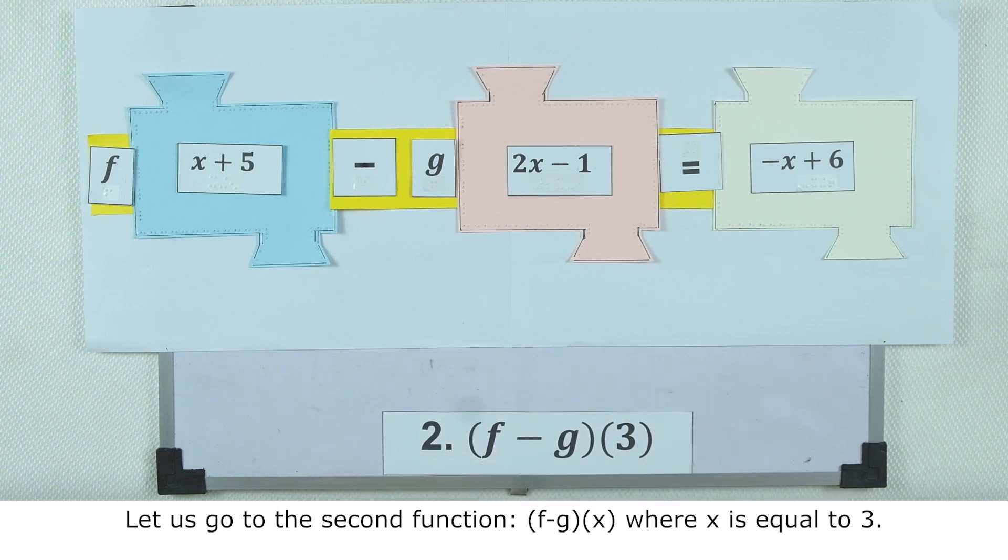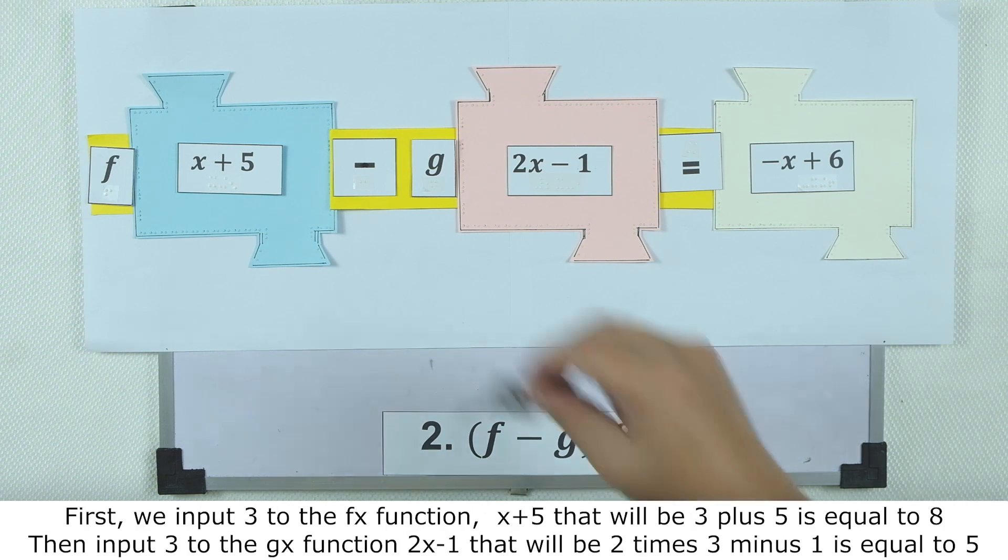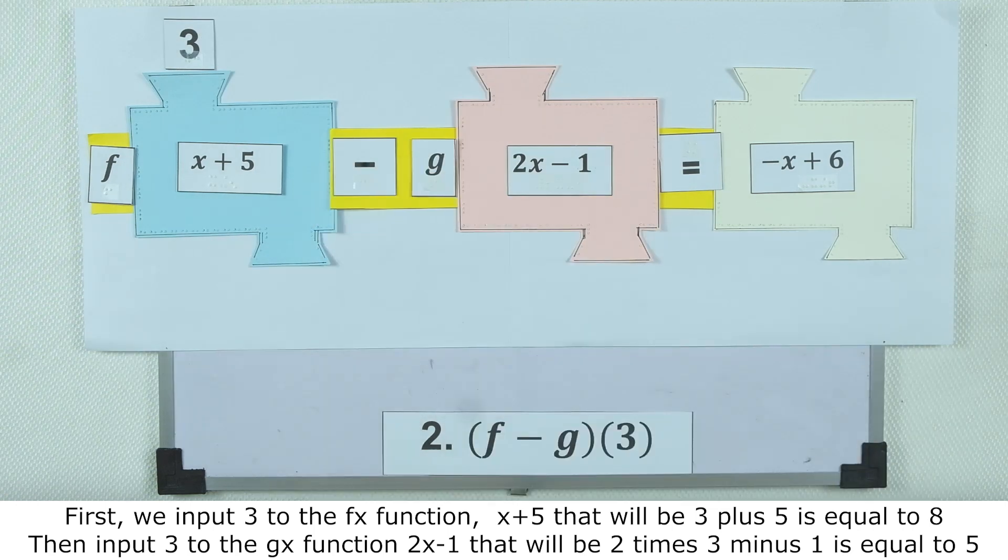We have f minus g, or the quantity of f minus g, where x equals 3. First, we need to input 3 on our f of x function. That will be 3 plus 5 equals 8.